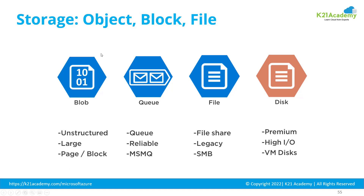Object storage is for unstructured data, for large objects — things like images, JPGs, files, backups, movies, etc. That's stored in blob. File server is what you might know as file share, SMB, or NFS file share, which you can mount over the network across different servers using the NFS protocol. Then you have disk, which is block storage — data written in blocks, needed when you attach a virtual machine or install databases that need storage. That's a premium disk with high IOPS that can be attached to a virtual machine.